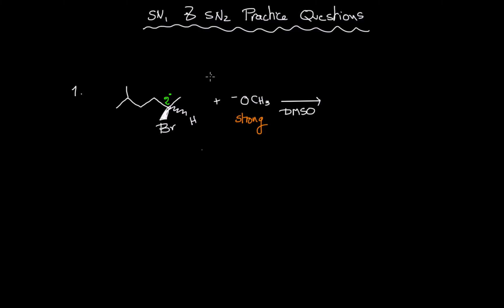If you watch my previous video on predicting the mechanism — whether it's SN1 or SN2 — you can see that we have a second degree carbon here with a strong nucleophile, therefore this is going to be an SN2 mechanism. The lone pair on the oxygen of the methoxide will be the nucleophilic site.